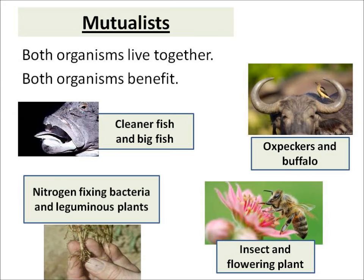And the most difficult one: nitrogen-fixing bacteria. They live on the roots of leguminous plants. They give the plants nitrates, and in return the bacteria get sugars from the plant.